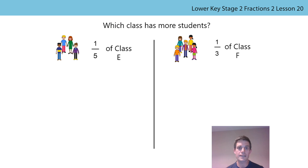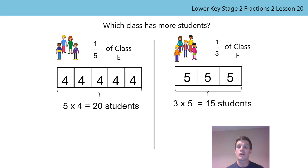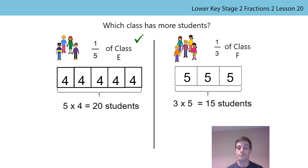Let's look at the whole problem again. The problem was: which class has more students? In class E, four students are a fifth of the class. In class F, five students are a third of the class. For class E: if a fifth is the part, the whole is five times as much, so five times four students equals 20 students. For class F: if a third is the part, the whole is three times as much, so three times five students equals 15 students. So 20 is greater than 15, meaning class E had the most students.